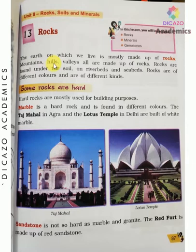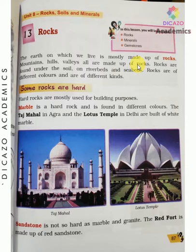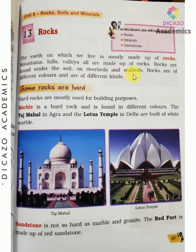Mountains, hills, and valleys — mostly they are all made up of rocks. Rocks are found under the soil, on riverbeds and seabeds as well.